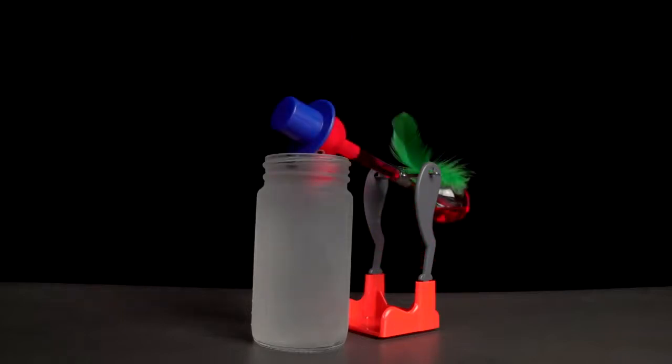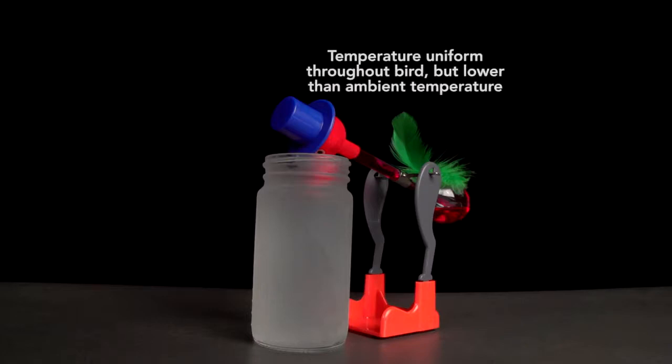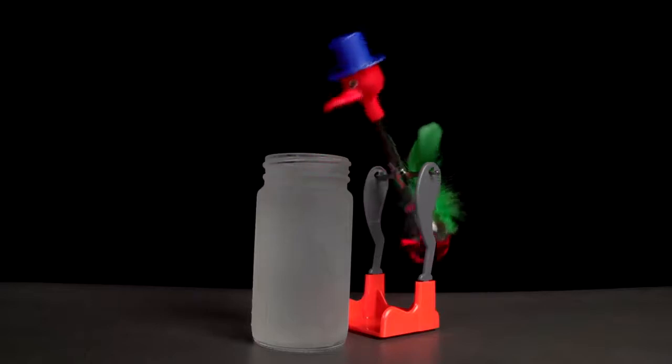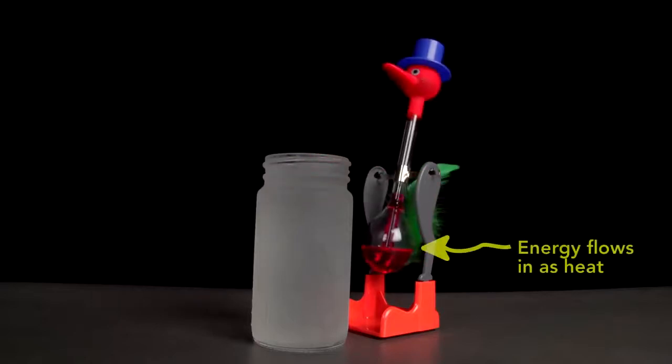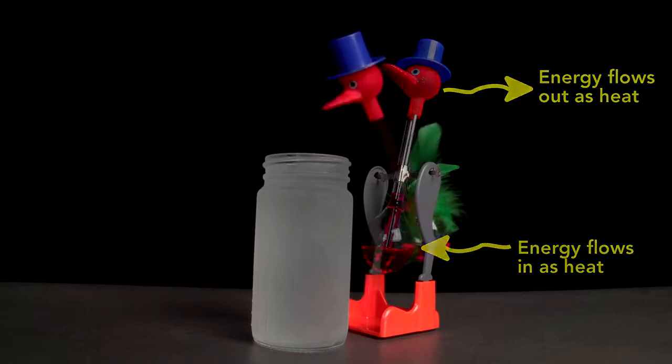Then, when it drinks, the pressure in the head and base start to equalize, so liquid returns to the base, but the overall temperature of the bird is now just a little below ambient temperature. When it returns to upright, the base draws in energy as heat, the head then rejects some energy as heat, and the bird drinks again.